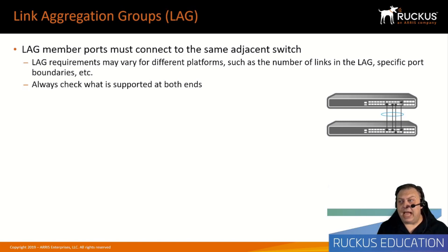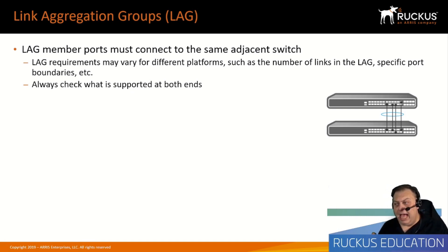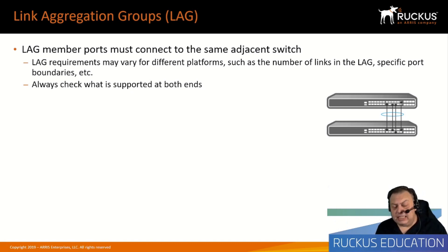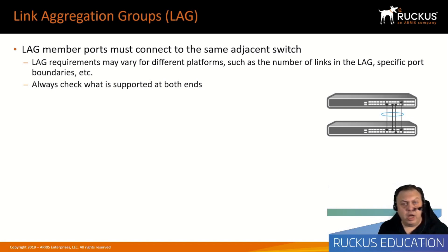As a quick review, a link aggregation group is a set of ports that you've essentially turned into one logical link between two peering devices. Keep in mind that in a multi-vendor environment, or when doing LAGs toward edge devices, different products from other manufacturers will have different requirements — including the number of links that can operate in a LAG together and specific port boundaries. Always check what's supported on both sides of the connection.